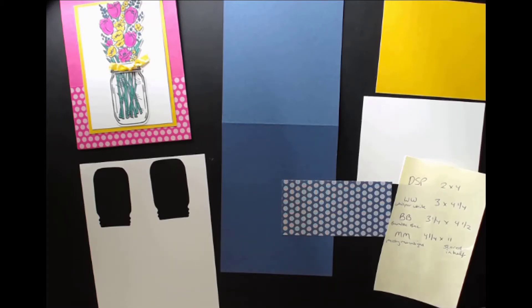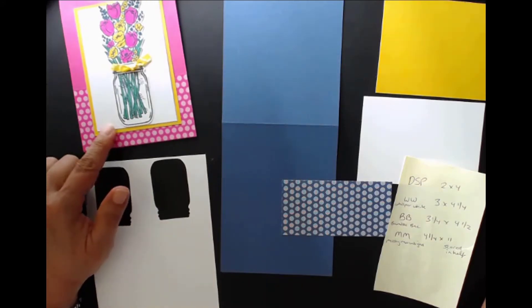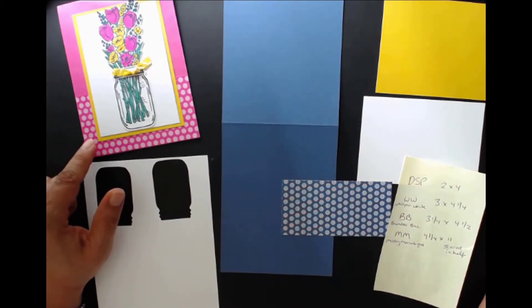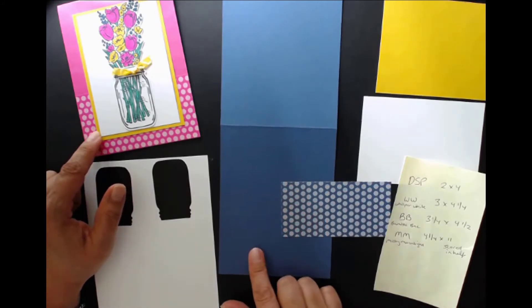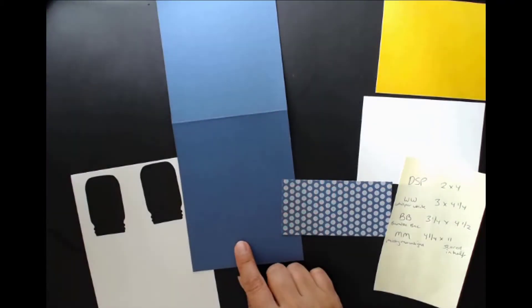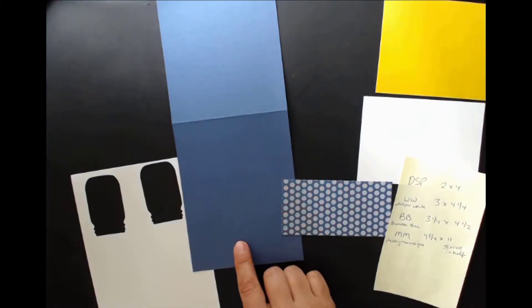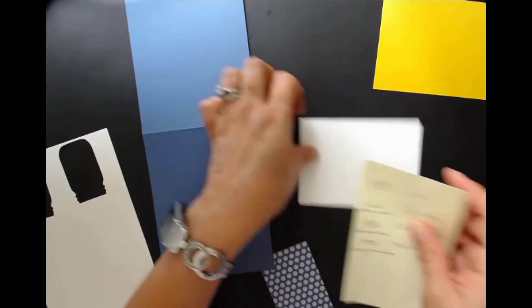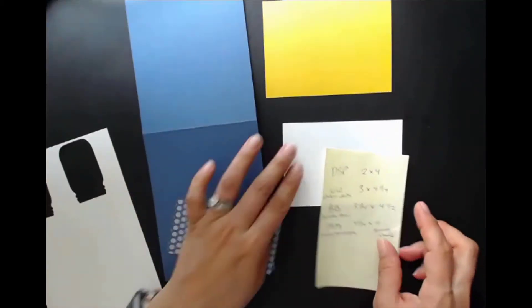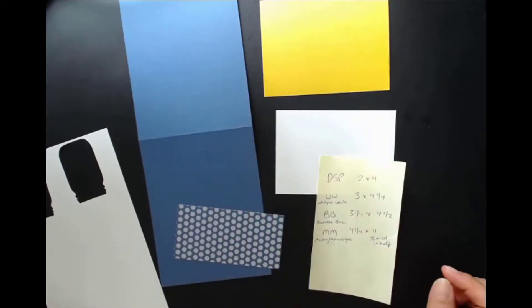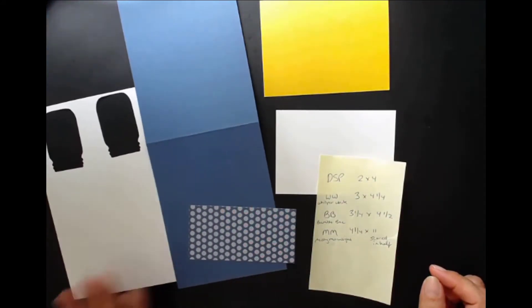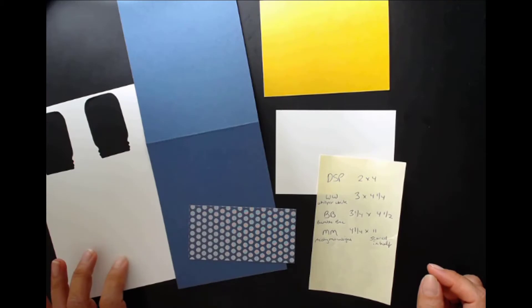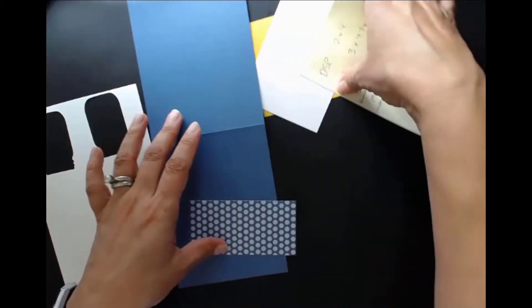Okay, so getting started. These were the pieces that we need for this. So in the sample that I showed you, I used the new in-color Magenta Madness for the base of the card. But I thought this one I would do in Misty Moonlight, also another in-color. So I have here the pieces and I wrote down the measurements for you of each of these different pieces here and then a piece of scrap paper as well so that we can use to stamp and punch on.